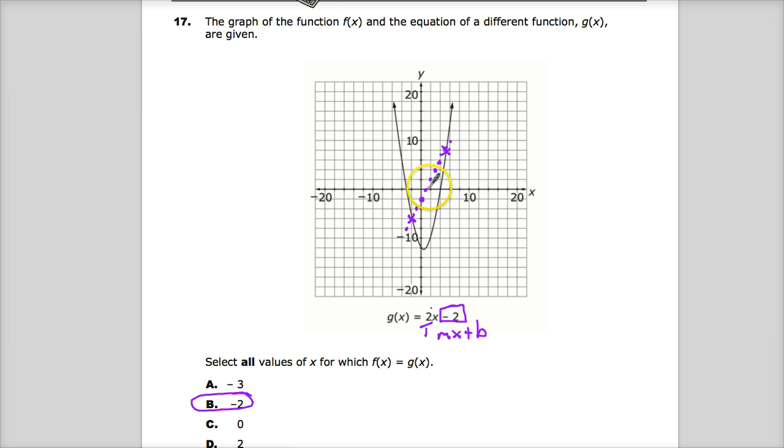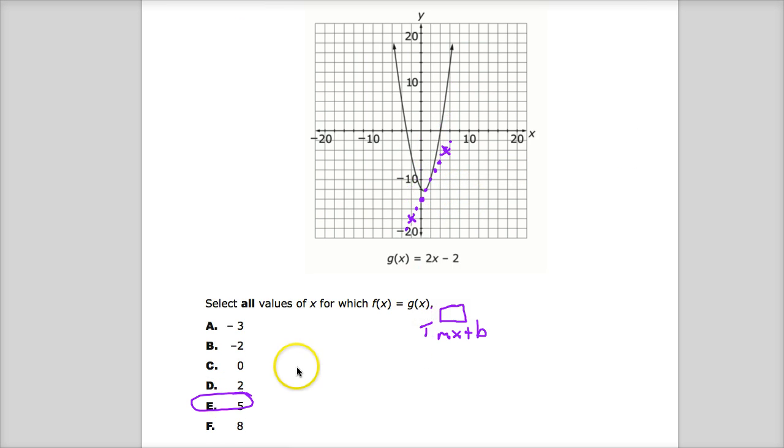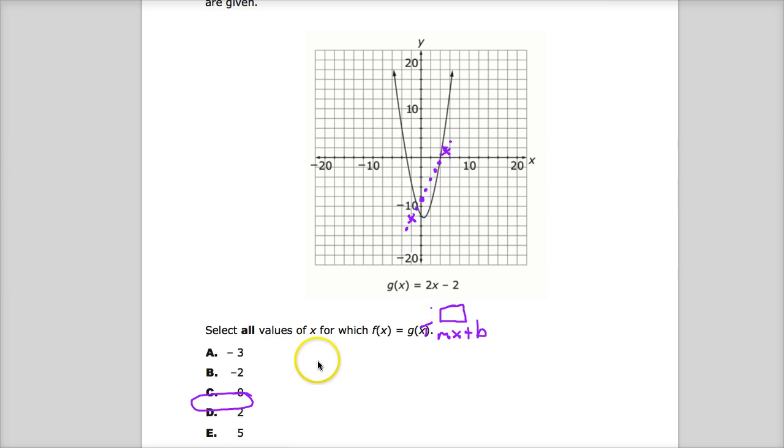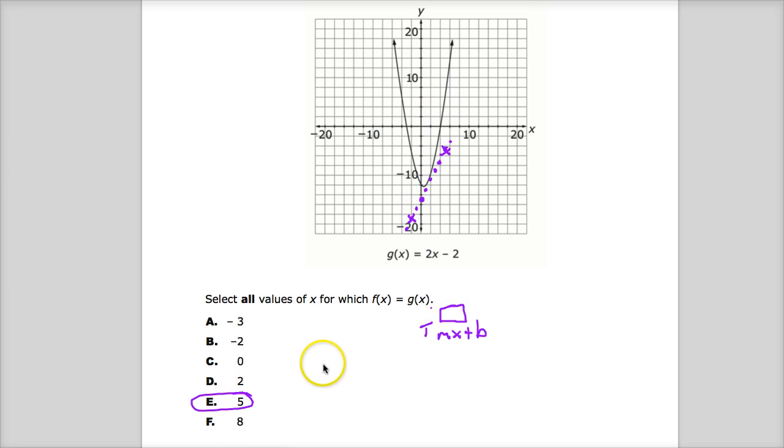So I would say two, four, five. And now I have to scroll and ruin all my hard work. So negative two and also negative five.